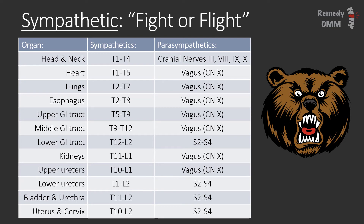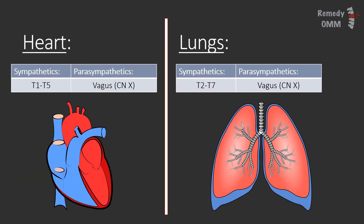Different sets of vertebral segments correspond to different organ systems. As you can see in this table, the further we go down, the lower the organ system in the body. Definitely know the heart at T1 to T5 — you can remember that 5 minus 1 is 4, and the heart has 4 chambers. The set just below that is the lungs at T2 to T7. Both of these structures receive parasympathetics through the vagus nerve, which will present with viscerosomatic changes at OA to C2.